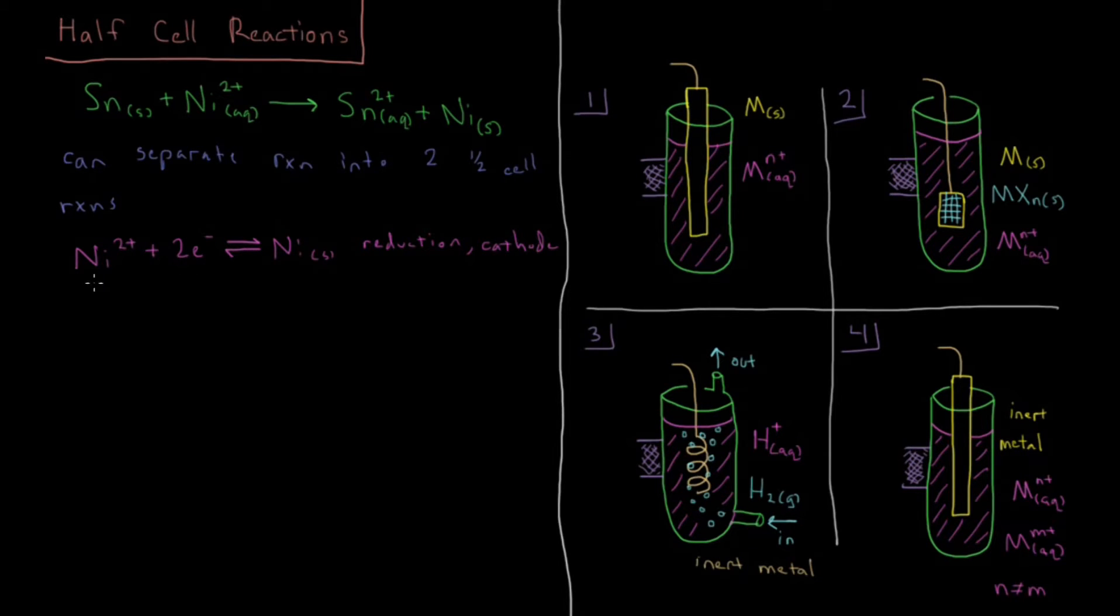Then our other half cell reaction is tin solid which is becoming tin 2+ in the aqueous phase and generating two electrons. And that is an oxidation which occurs at the anode. Oxidation is loss.